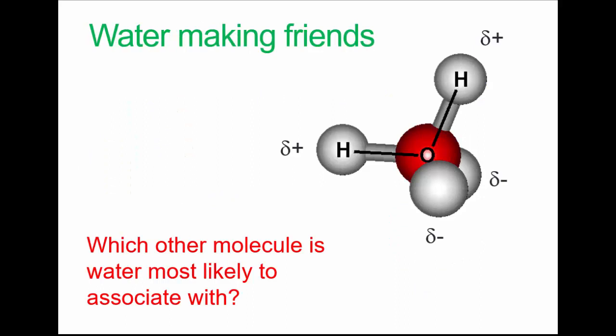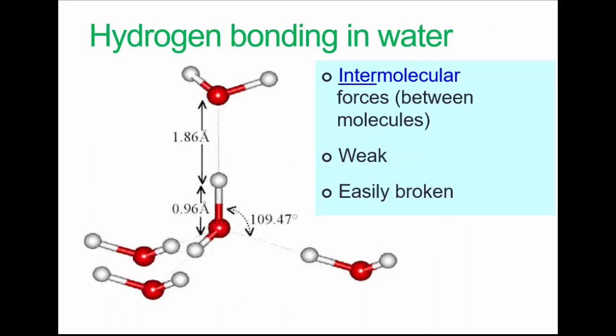So a hypothetical question which I'm sure you can figure out the answer to: what other molecule is water most likely to associate with? In almost all circumstances, that's going to be other water molecules. Other species will be vastly outnumbered and statistically water molecules are more likely to bump into each other.